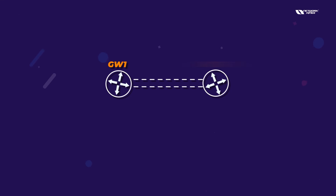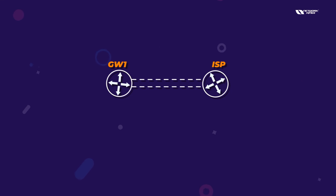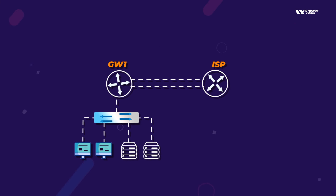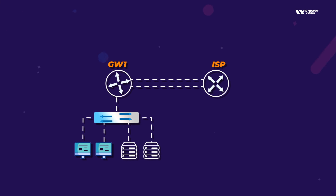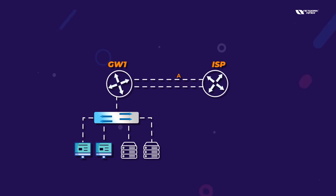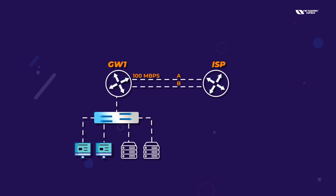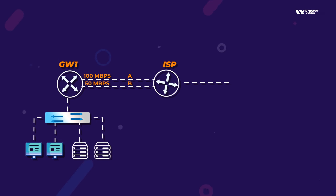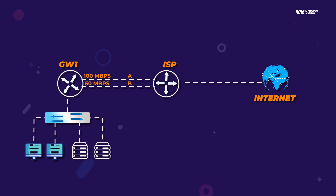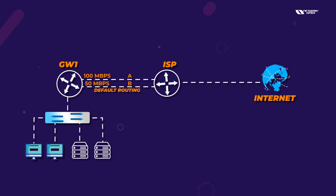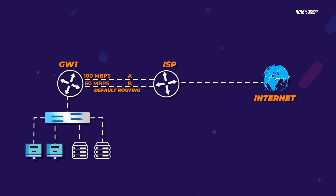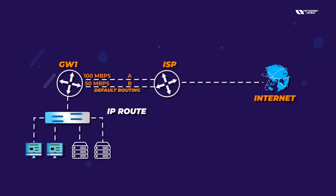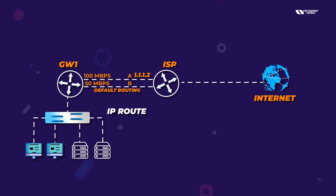In another scenario, your gateway router has two connections to the same ISP — a primary link A at 100 Mbps and primary link B at 50 Mbps. You still have the same internal network, but now two links from one ISP. In this case, you can still use default routing with static default routes.